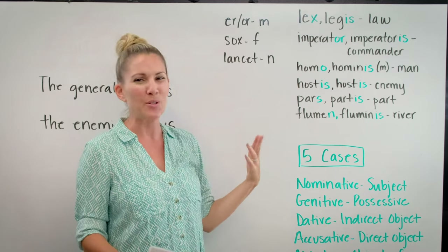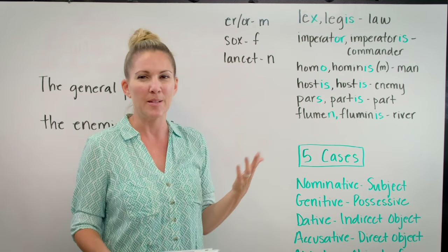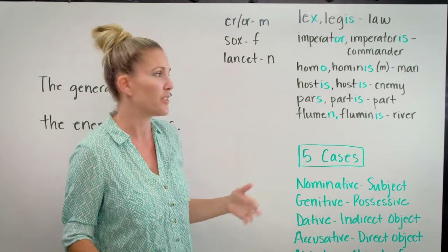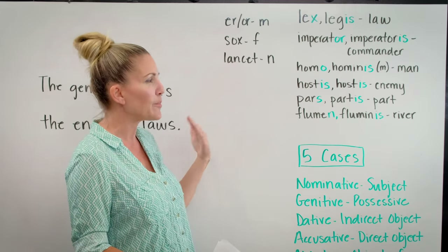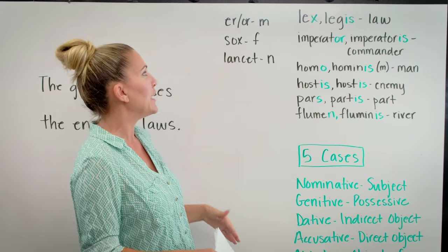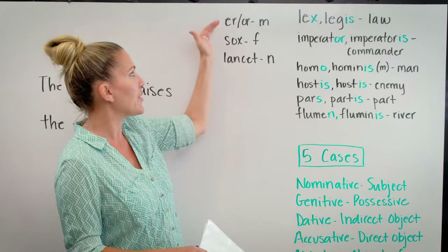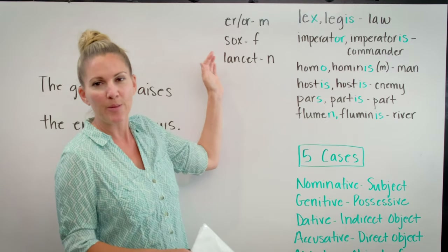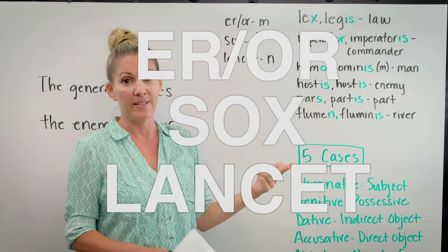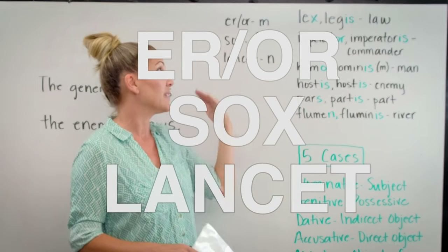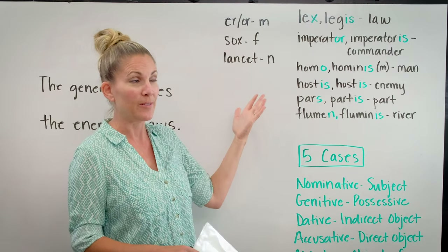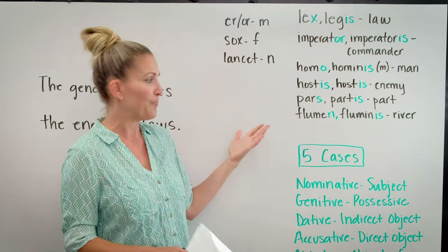It kind of goes to reason — a river isn't masculine or feminine, it doesn't really have a gender, it's just neuter. Sometimes these things follow logic, not always. These are the three acronyms to remember for the third declension: ERROR is masculine, SOCKS is feminine, LANCET is neuter.